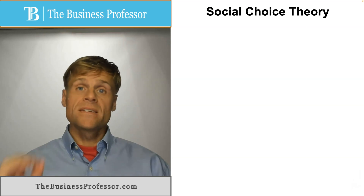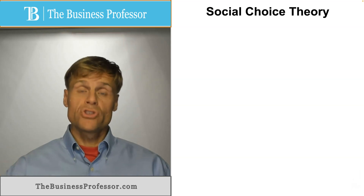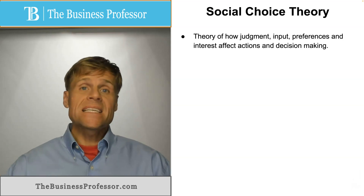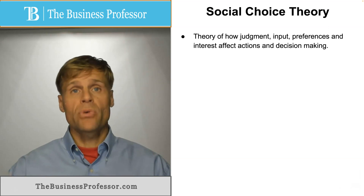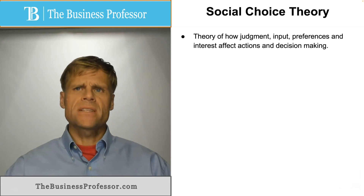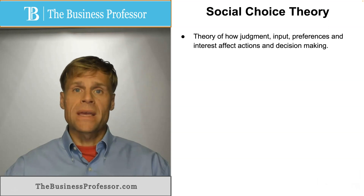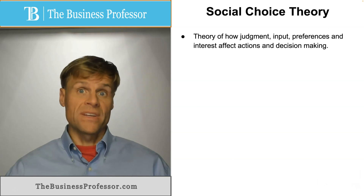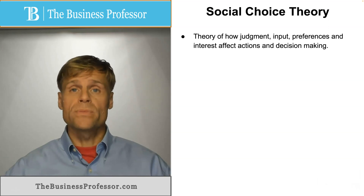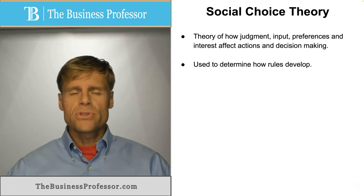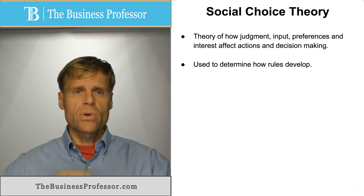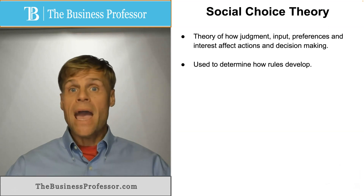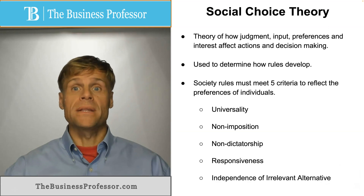What is social choice theory? Generally, this is a theory that examines how judgment, input, preferences, and interests affect the actions and decision-making of individuals or collective groups. It's oftentimes used to evaluate whether the development of rules are just, or exactly how rules develop in the populace.